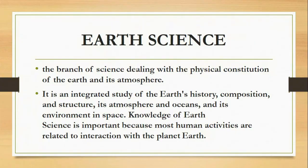The next branch of physical science is earth science — the branch dealing with the physical constitution of the Earth and its atmosphere. It is an integrated study of the physical history, composition and structure, its atmosphere and oceans, and its environment in space. Knowledge of earth science is important because some human activities are related to interaction with planet Earth.